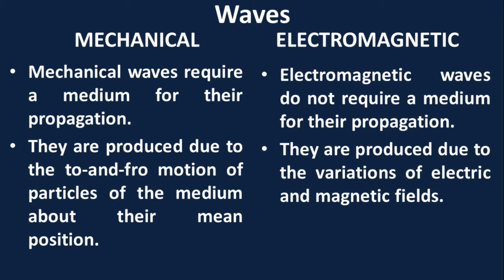Mechanical waves are produced due to the to and fro motion of particles of the medium about their mean position. But in an electromagnetic wave, they are produced due to the variations of electric and magnetic fields.